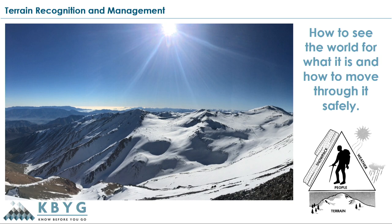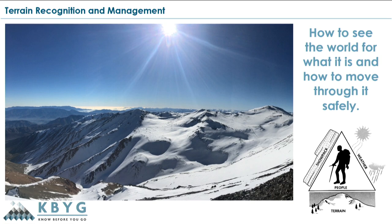You can see here on the bottom right corner our avalanche triangle — the three variables that make the right conditions for an avalanche to occur. We have weather, snowpack, and terrain. Luckily, terrain is the only piece of that triangle that we can have full control over when we're in the backcountry, so we're really going to focus on that today.